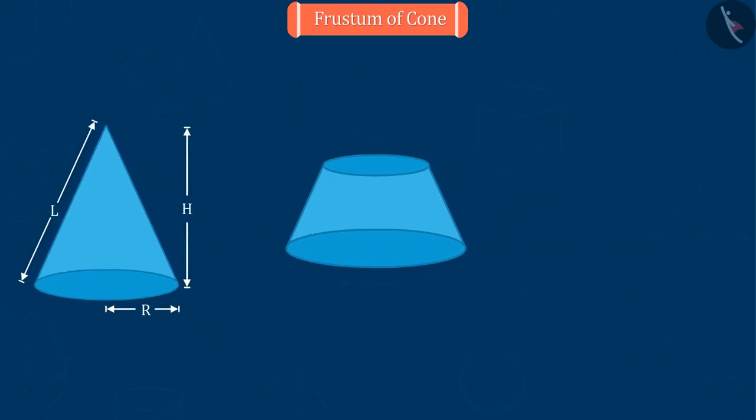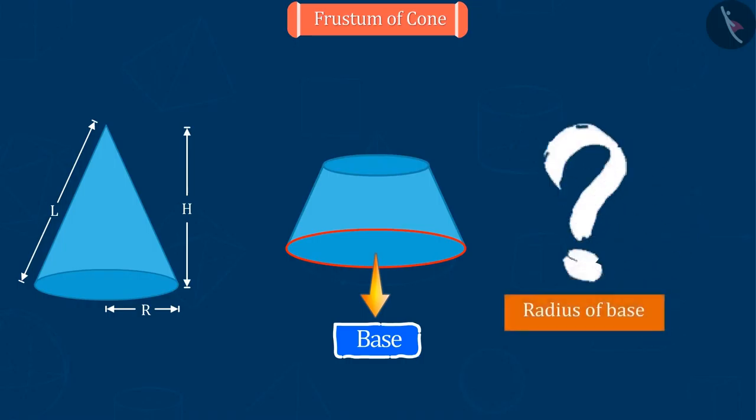You can see that the frustum has two circular ends. Its lower end is called the base of the shape. Can you tell the radius of this base? Absolutely correct. Because it is the lower part of this cone, therefore its radius will be the same as the radius of the cone, which is capital R.